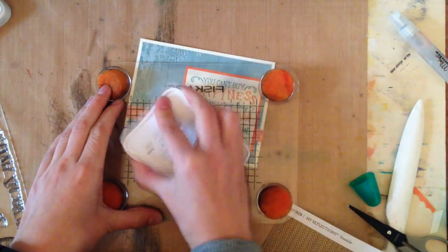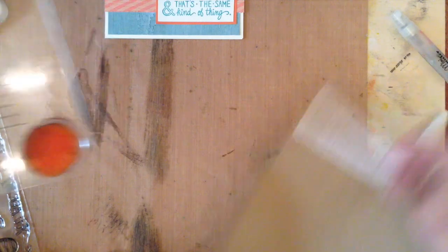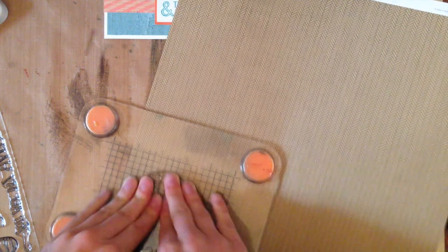Next up I wanted to stamp the ice cream. So I stamped that in saddle ink which is a lighter brown color and I stamped it directly onto the patterned paper. This paper also comes in the seaside paper pack.